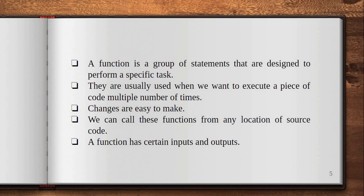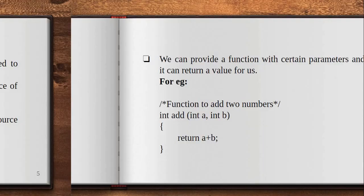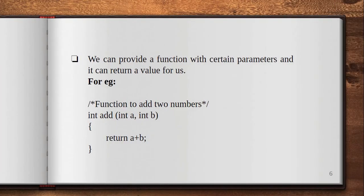By using functions, we reduce writing that piece of code multiple times. If we want to make some changes, we can do it in a particular function rather than changing the whole code. We can call these functions from any other location of the source code, which is an advantage. A function has certain inputs and outputs — they are not necessarily needed. We can provide functions with certain parameters and it can return a value. For example, a function to add two numbers: int add(int a, int b) and then return a + b. Here 'add' is the function name and int a, int b are the function parameters, and return a+b is the return statement.